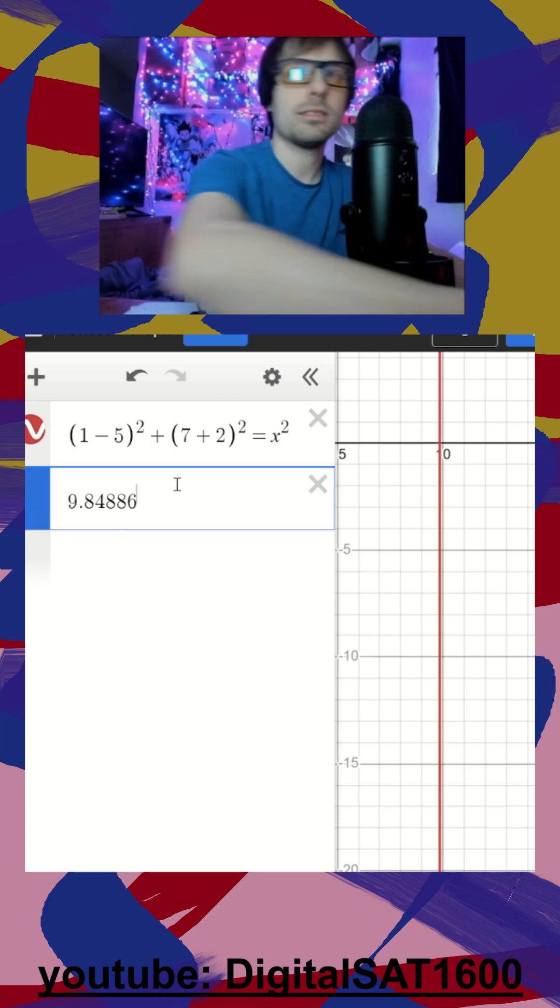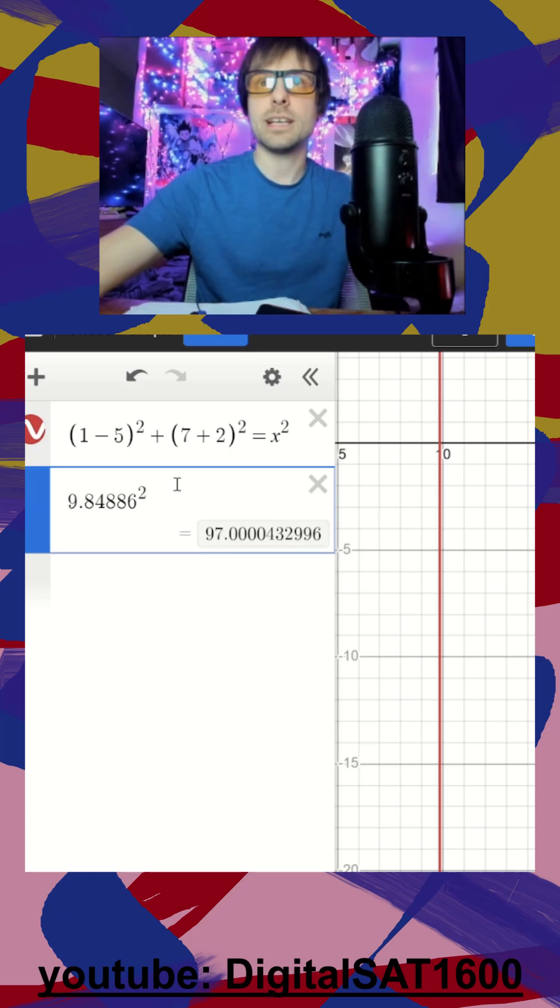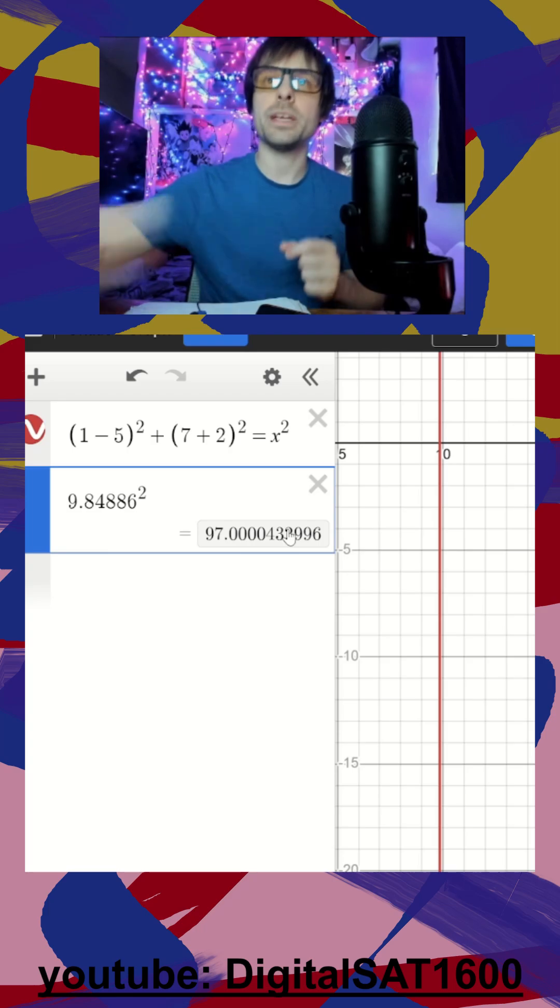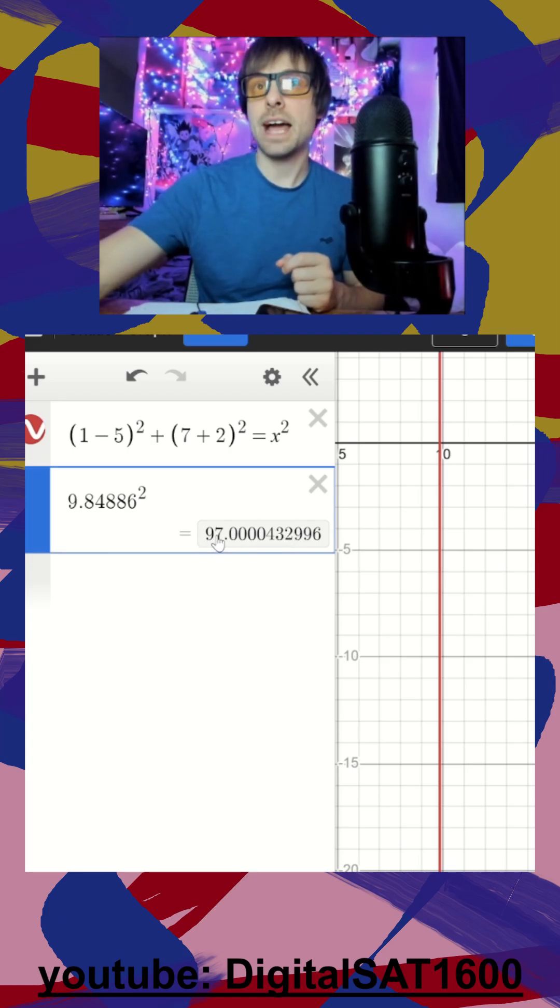I'm going to square it because they want radius squared on the right side of my equation. Anytime you see a value like this, it means there was a repeating decimal, but 97 is actually my value. So I go back to my paper.